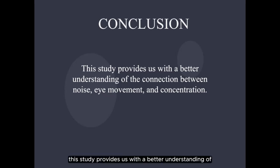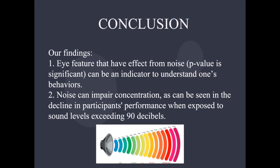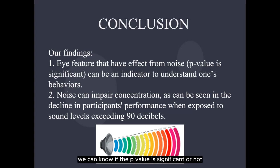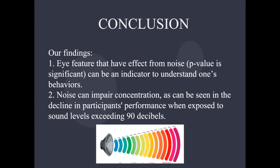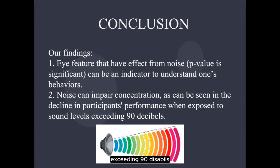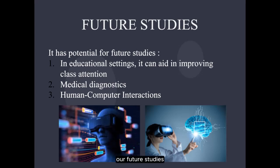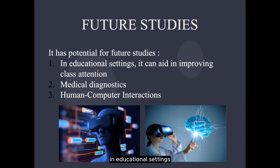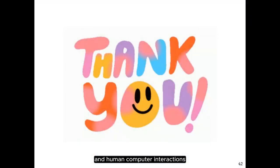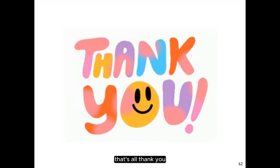Our conclusion: this study provides a better understanding of the connection between noise, eye movement, and concentration. First, eye movement effects from noise — the p-value can be an indicator to understand one's behaviors. Second, noise can impair concentration, as seen in the decline in participants' performance when exposed to sound levels exceeding 90 decibels. For future studies, this research has potential in educational settings to aid in improving class attention, in medical diagnostics, and in human-computer interactions. Thank you.